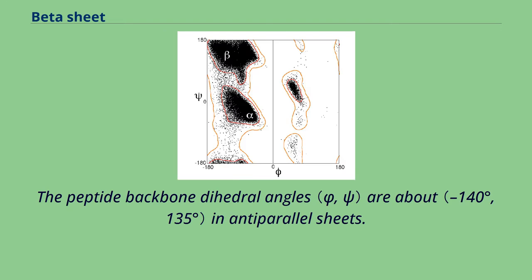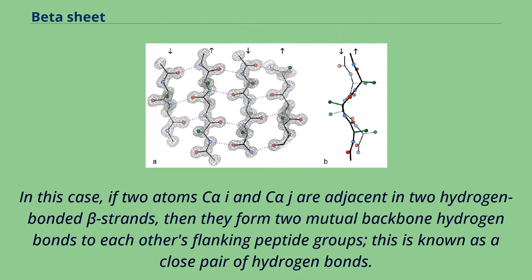The peptide backbone dihedral angles are about in anti-parallel sheets. In this case, if two atoms C-alpha i and C-alpha j are adjacent in two hydrogen-bonded beta strands, then they form two mutual backbone hydrogen bonds to each other's flanking peptide groups. This is known as a close pair of hydrogen bonds.